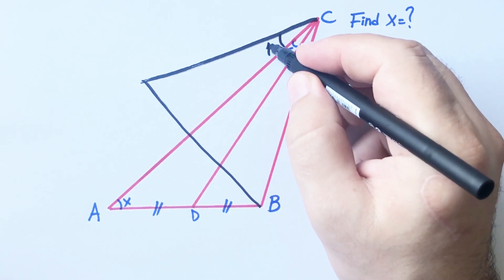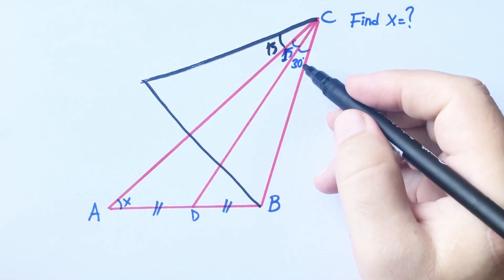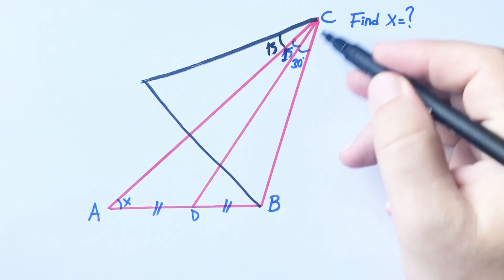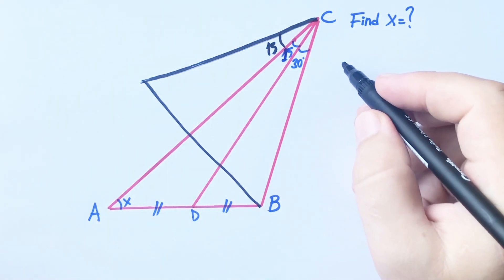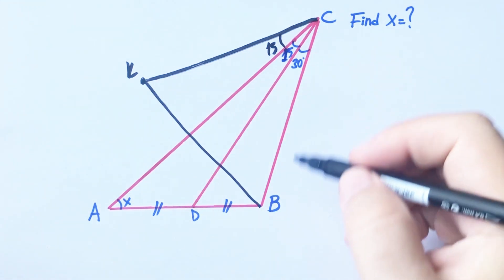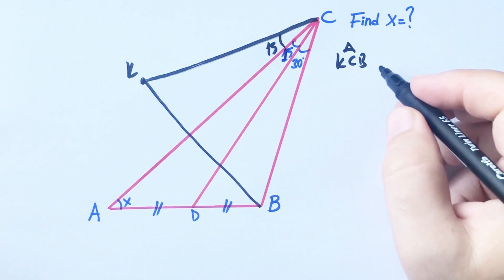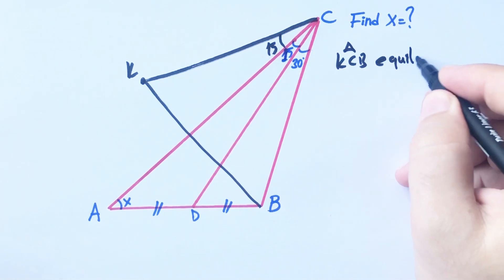Here must be 15 degrees. Let's call this point K. Triangle KCB is an equilateral triangle.